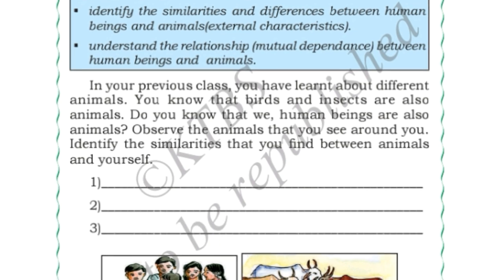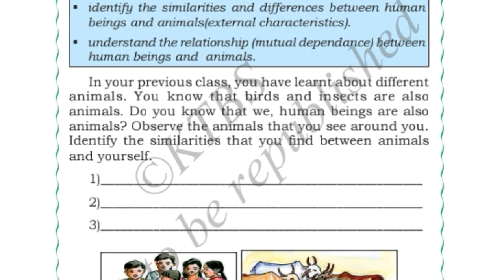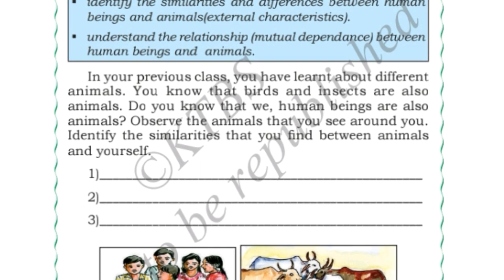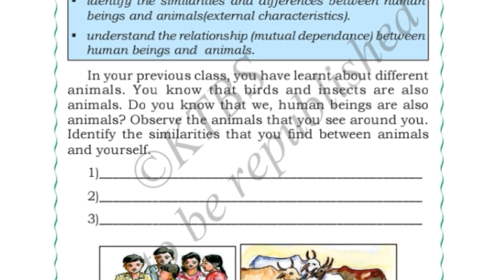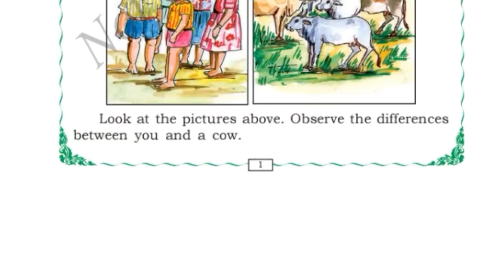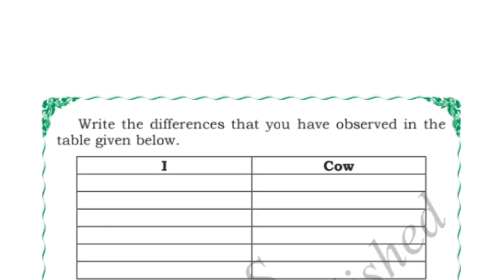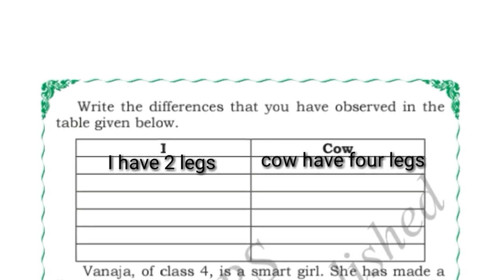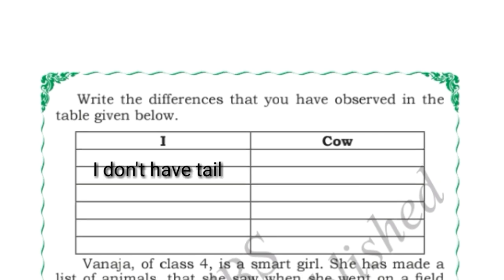Look at these pictures and observe the difference between you and a cow. So what are the differences between us and a cow? In the 'I' column we will write: I have two legs, cow has four legs. I do not have a tail, cow has a tail.